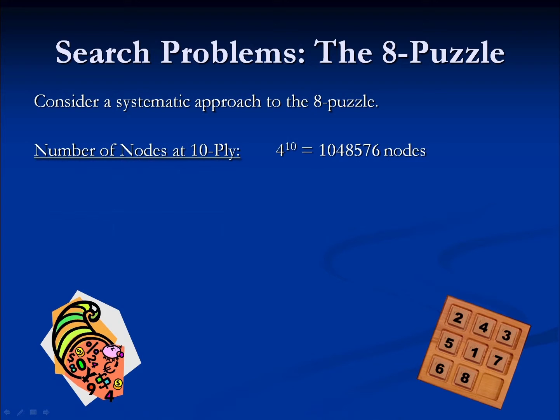That's the branching factor of the problem, which puts us at somewhere around a million nodes. Now that's not too bad — with modern hardware, that seems doable. But it's not uncommon for these types of problems to go to a depth of, say, 55 — to have a 55-ply tree — in order to solve this problem. And that is closer to 1.5 times 10 to the 25 nodes.